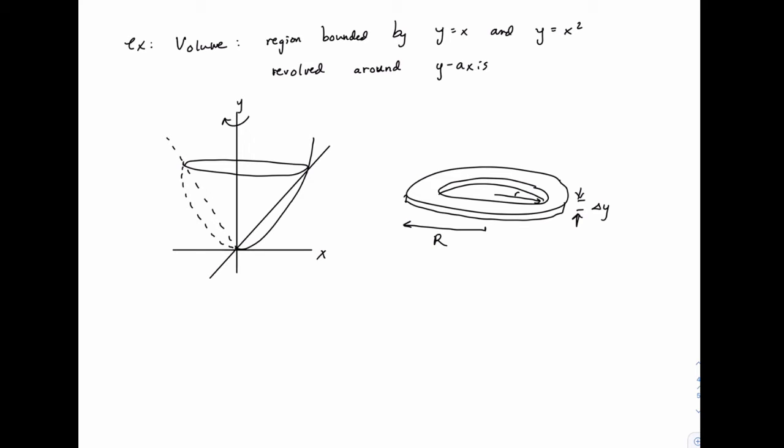Now to do this, recognize that this outer edge is y equals x squared, and the inner edge is y equals x. But just like we saw with areas, recognizing that our integral is going to be in terms of y, because of that thickness delta y which turns into dy, that means we need to rewrite these functions as x equals a function of y.